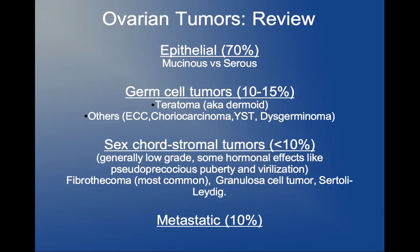The granulosa cell tumor is also a common sex cord stromal tumor. The last roughly 10% is accounted for by metastatic disease of the ovary. A lot of it originates from the uterus — primary uterine cancer can metastasize to the ovary — as well as from the stomach (known as drop metastasis), the colon, breast cancer, and even lymphoma. These metastatic sources are also important to know.